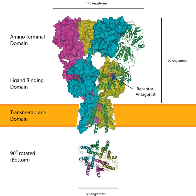Dimerization starts in the endoplasmic reticulum with the interaction of N-terminal LIVBP domains, then zips up through the ligand binding domain into the transmembrane ion pore. The conformation of the subunit protein in the plasma membrane caused controversy for some time. While the amino acid sequence indicated four transmembrane domains, proteins interacting with the subunit indicated that the N-terminus is extracellular while the C-terminus is intracellular. It was eventually discovered that the second transmembrane domain does not cross the membrane at all, but kinks back on itself within the membrane and returns to the intracellular side. When the four subunits of the tetramer come together, this second membranous domain forms the ion-permeable pore of the receptor.